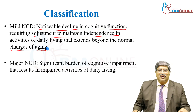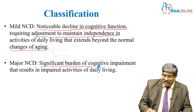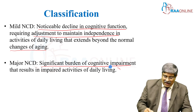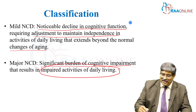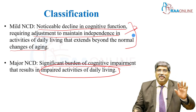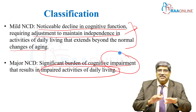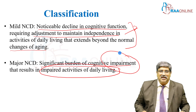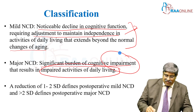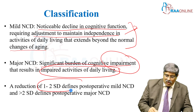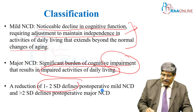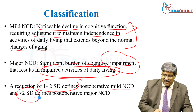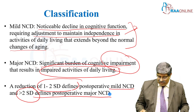What is major neurocognitive disorder? There is significant burden of cognitive impairment that results in impaired activity of daily living. Here independence is lost and you have to depend on somebody to take care of yourself to maintain the activities of daily living. Another way to put it: if it is deviated from one to two standard deviations from normal, it is mild neurocognitive disorder. If it is greater than two standard deviations, it is major neurocognitive disorder.